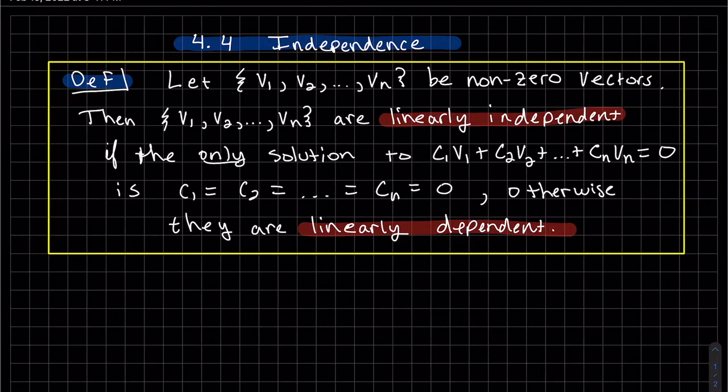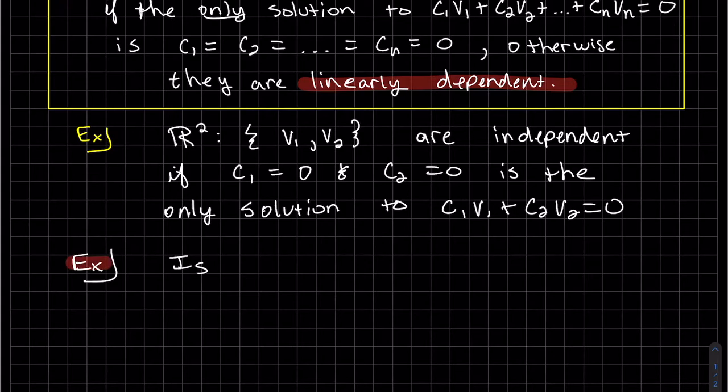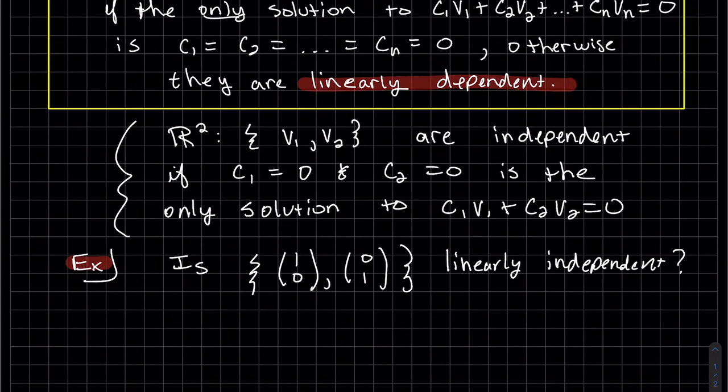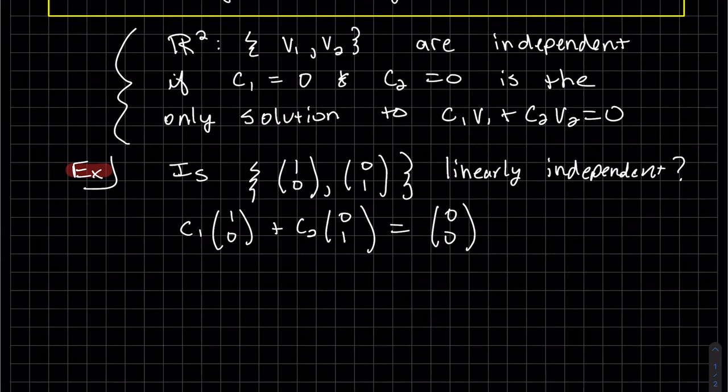Let's look at a couple examples in R2. What does this look like in R2? Well, this wasn't really an example, this was just a statement. So in this scenario, 1,0 and 0,1, are they linearly independent? So we have to set up our linear combination of the two, and we set it equal to zero. It is the zero vector, and we need to solve for c1 and c2.